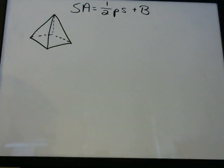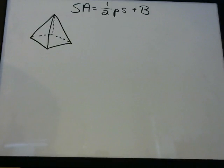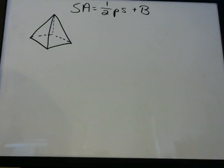Surface area means you have a three-dimensional object, and you can think of it as painting the whole thing. What is the total paint needed for all of the sides and the bottom and the top — if you have a top — for that object?